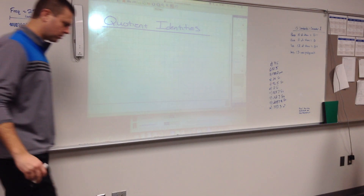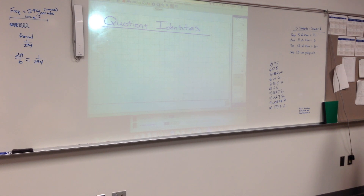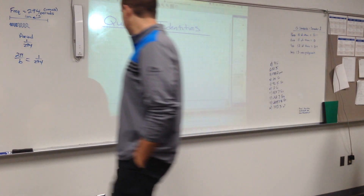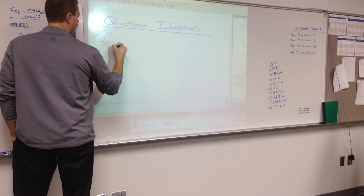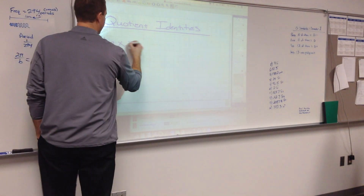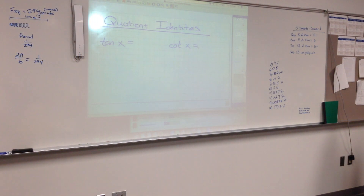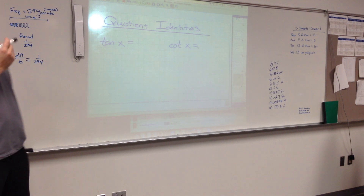Now, quotient identities. Quotient means dividing. There are just two of these, and really you don't need to memorize both of them, because if you know one, you should know the other. Tangent of x can be rewritten as sine over cosine.